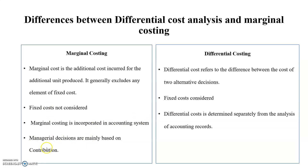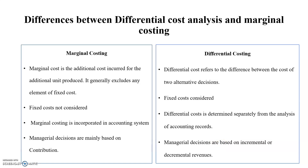In marginal costing, managerial decisions are mainly based on contribution, which is the basic element for decision making. But in differential costing, decisions are based on differential revenues or differential costs. When an alternative course of action provides incremental revenue or decremental cost, that alternative will be recommended and executed. These are the key differences between differential cost analysis and marginal costing.